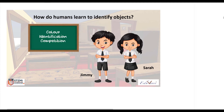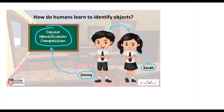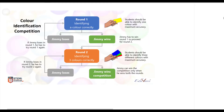Let us get started by looking at a simple example. I'd like to introduce two of our friends, Jimmy and Sara, who are good friends in school. Jimmy has decided to apply for a competition where he needs to identify colors. The competition is divided into two rounds — round 1 is about identifying one color correctly, and if Jimmy wins round 1 he goes to round 2 where he needs to identify three colors.